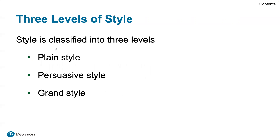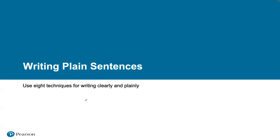There are three levels of style. Plain style stresses clear wording and simple prose. Persuasive style is used to influence people to accept ideas and to take action. And finally, grand style stresses eloquence — a higher level of writing for what you're trying to communicate to the audience.